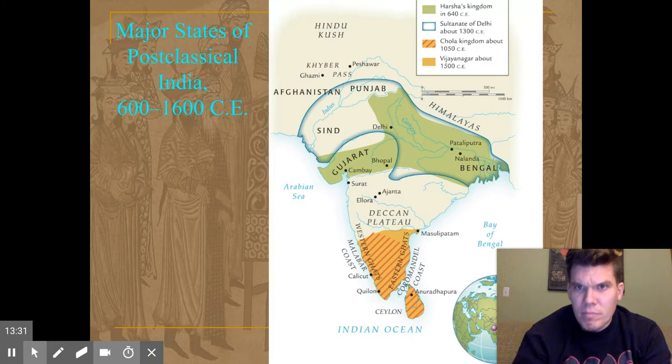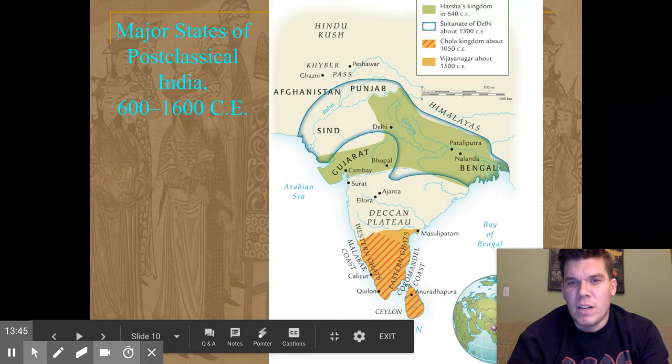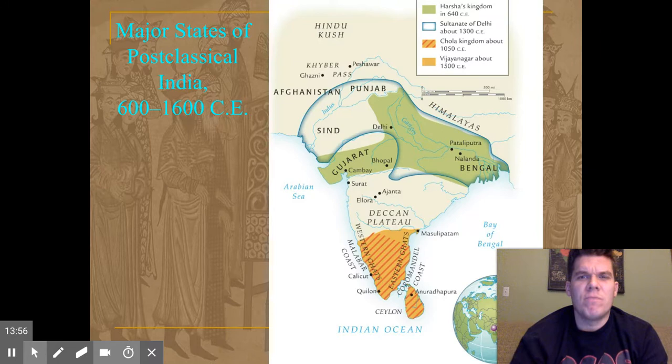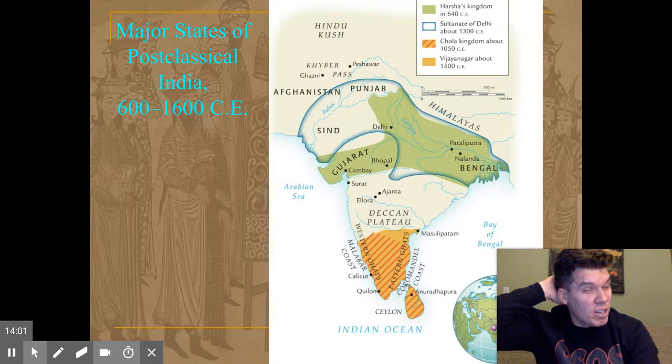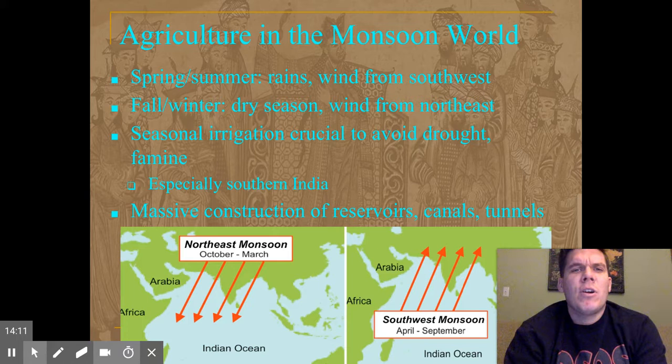We see Harsha's kingdom in the north, the Sultanate of Delhi at about 1300, the Chola kingdom at about 1050, and the Vijayanagar kingdom at about 1500. India was never really a unified state — very different from Rome and China — and is very much an exception in terms of post-classical statehood. Trade was the unifying theme more so than political statehood.